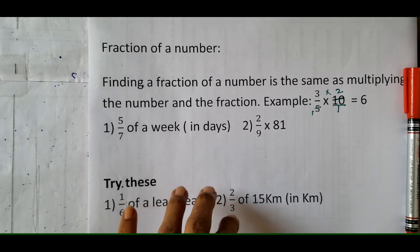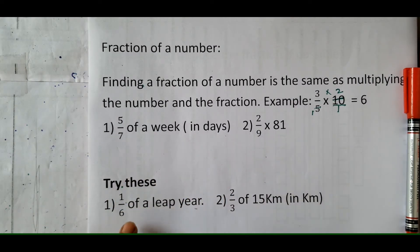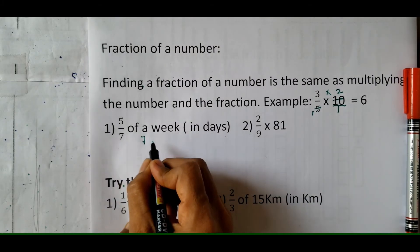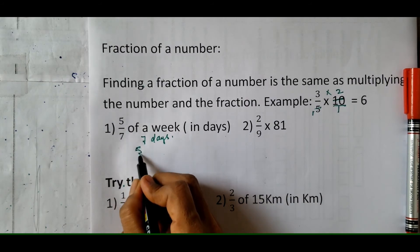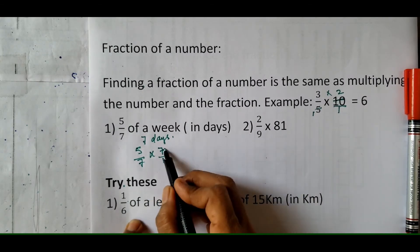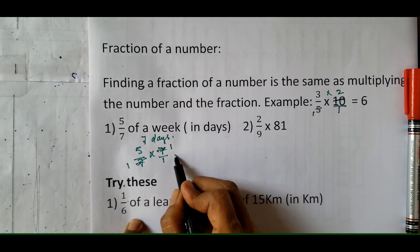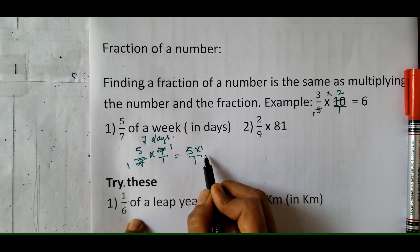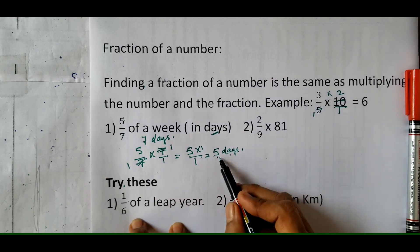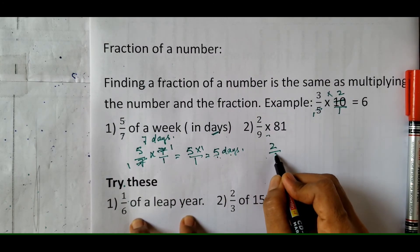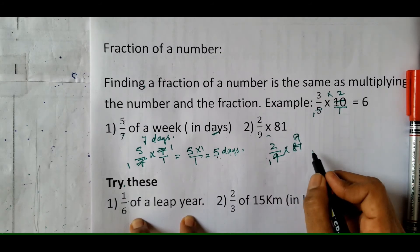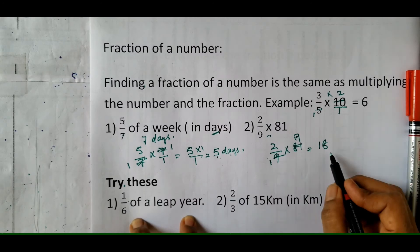Let us take two examples. We have to find 5 upon 7 of a week, written in days. A week has 7 days, so we find 5 upon 7 into 7. The 7s cancel — 7 ones are 7 — giving 5 into 1 divided by 1 which equals 5 days. So 5 sevenths of a week is 5 days. For the next: 2 upon 9 into 81 — 9 ones are 9 and 9 nines are 81 — giving 2 into 9, which equals 18. This is how you calculate fraction of a number.